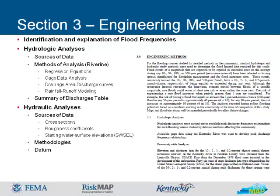Detailed explanations of the methods used to determine peak discharges for streams and why that methodology is appropriate for the watershed are outlined. Typical methodologies are regression equations, gauge data analysis, drainage area discharge curves, and rainfall runoff modeling. The Summary of Discharges table briefly summarizes the peak discharges and drainage areas at locations along the stream. Not all discharges used in the analyses are shown on the table. The locations chosen for the table are generally at physical features shown on the maps, and peak discharges for the commonly analyzed recurrence intervals are shown in the tables.